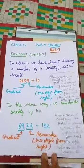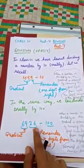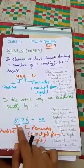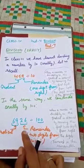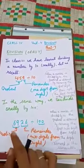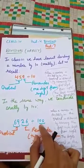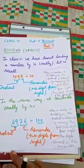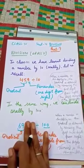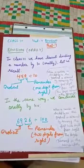Now, in the same way, we can divide orally by 100. Let us divide 6926 by 100. When a number is divided by 100, the quotient is obtained by removing the first two digits from the right and the removed digits are the remainder. In 6926, when we divide it by 100, we will remove the last two digits from the right. So the quotient is 69 and 26 is the remainder.